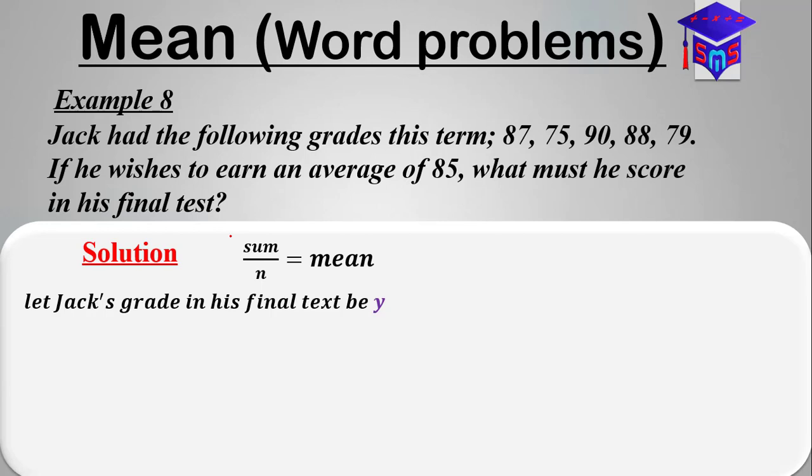Whatever score he's going to get in the final test, when we add it to the already existing five scores, then the scores become six scores. If you have six scores or six grades and you want to find the average of the six grades, you'd have to add all the grades and divide by six. That will give us the average. In any case, we find the sum over the number of grades, and that will give us the mean.